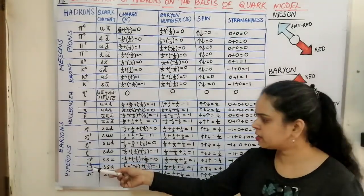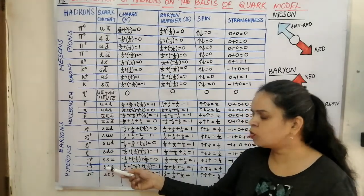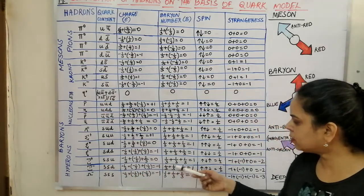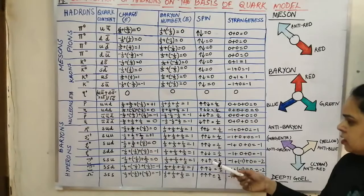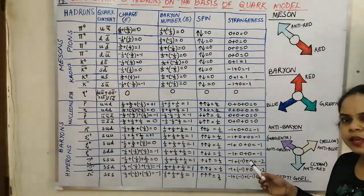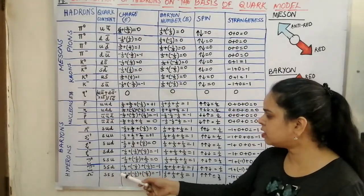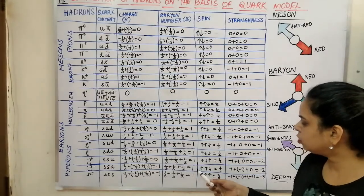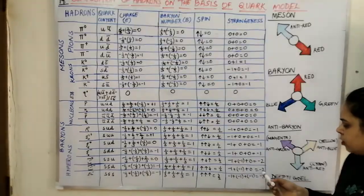For the cascade particles, cascade neutral (Ξ⁰) has 2 strange quarks — that is 2S and 1U — giving charge 0, baryon number 1, spin 1/2, and strangeness −2 since there are 2S quarks. For cascade negative (Ξ⁻), the combination is S, S, D: charge = −1, baryon number = +1, spin 1/2, and again strangeness = −2.